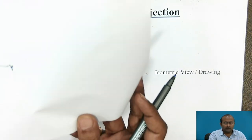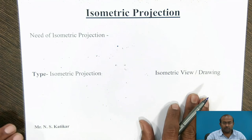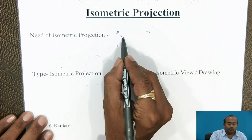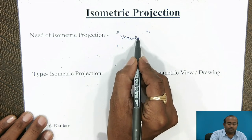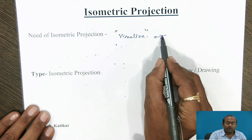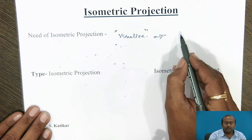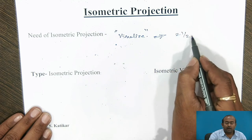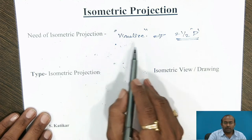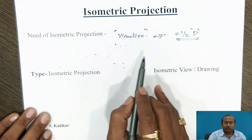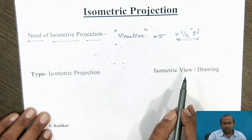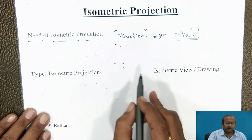Now let us see the need for isometric projection. The need is to visualize by all means. Isometric projection, isometric drawing, and isometric view are nothing but 2-and-a-half D visualization drawings. To visualize the part geometry overall, we have to use isometric projection.